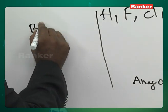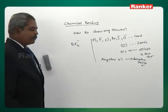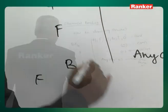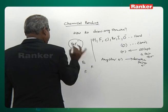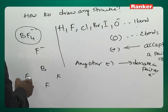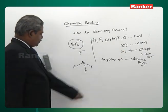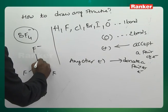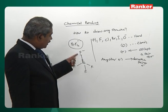BF4⁻: one boron, four fluorines. One of them is F⁻. Fluorine forms one bond. And what is the role of a minus in a group? Whenever there is a minus, it donates a pair of electrons to the central atom. This is called a coordinate covalent bond — whenever somebody donates a pair of electrons.